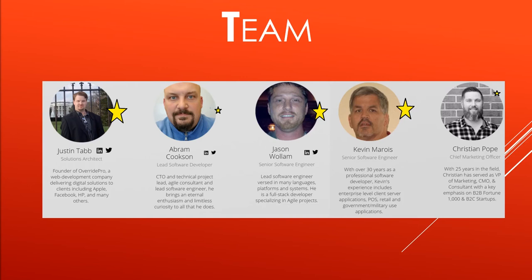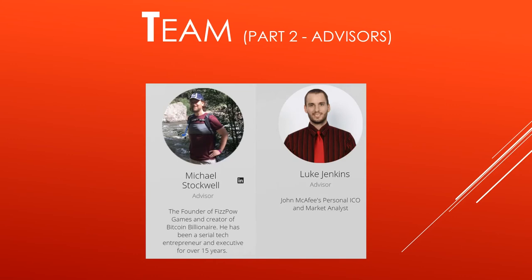Their white paper also states they have a team of 22 developers, designers, architects, and project managers who have been together for 13 years — that's a huge, close-knit family, which is exactly what you want for a large project like this. They have also built projects for several Fortune 100 companies, so it's a very solid and trustworthy team. For the advisors, I had a hard time finding information on Luke Jenkins — he's listed as John McAfee's personal ICO and market analyst, which didn't earn a star from me. Neither of the advisors got stars or superstars in my assessment.